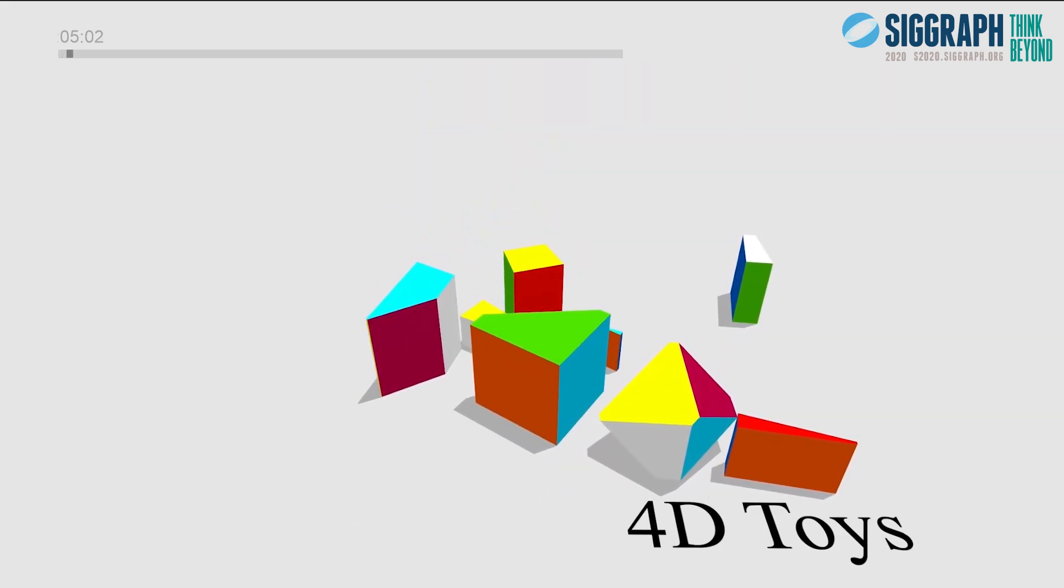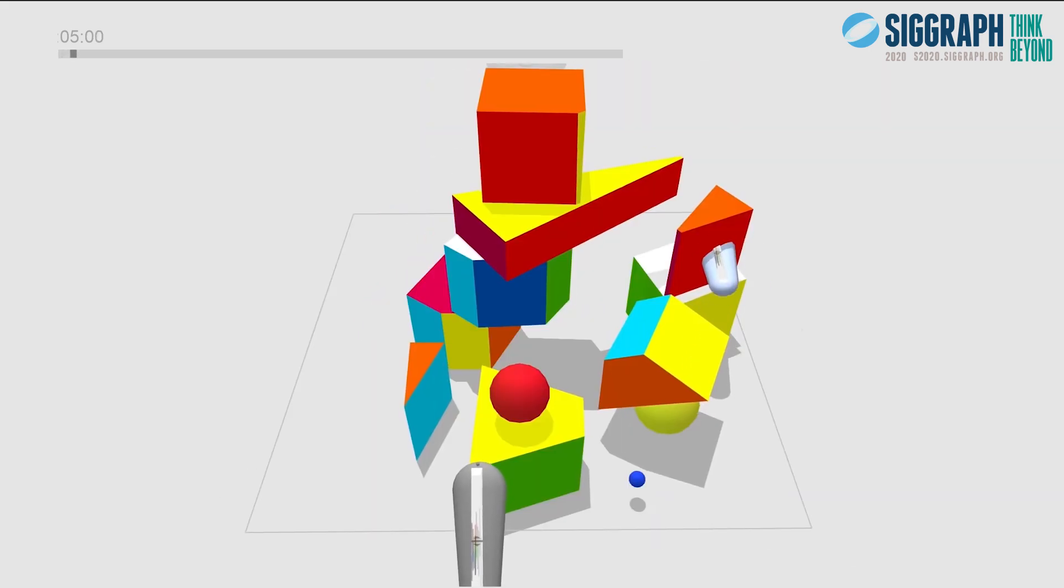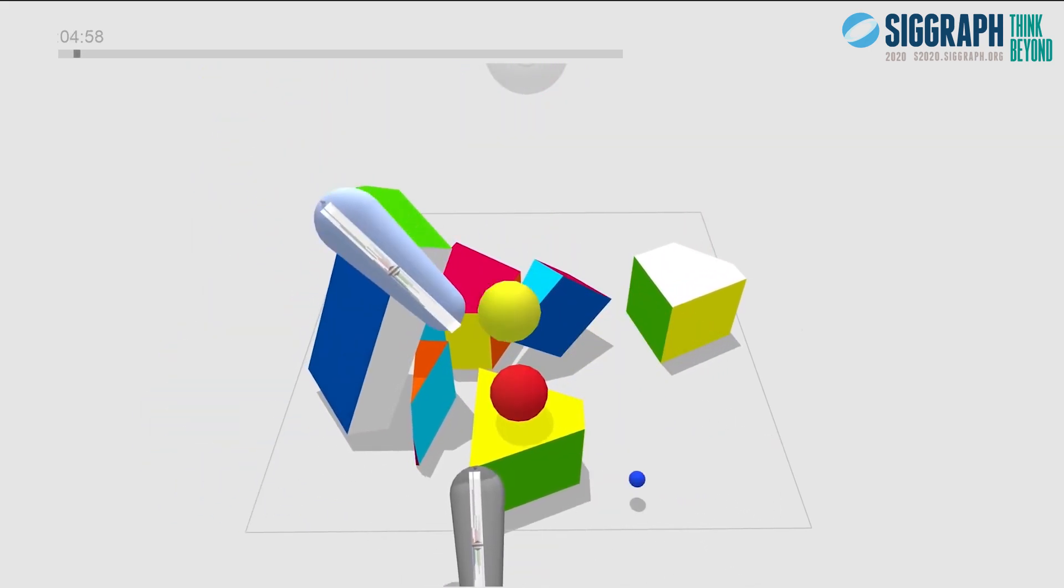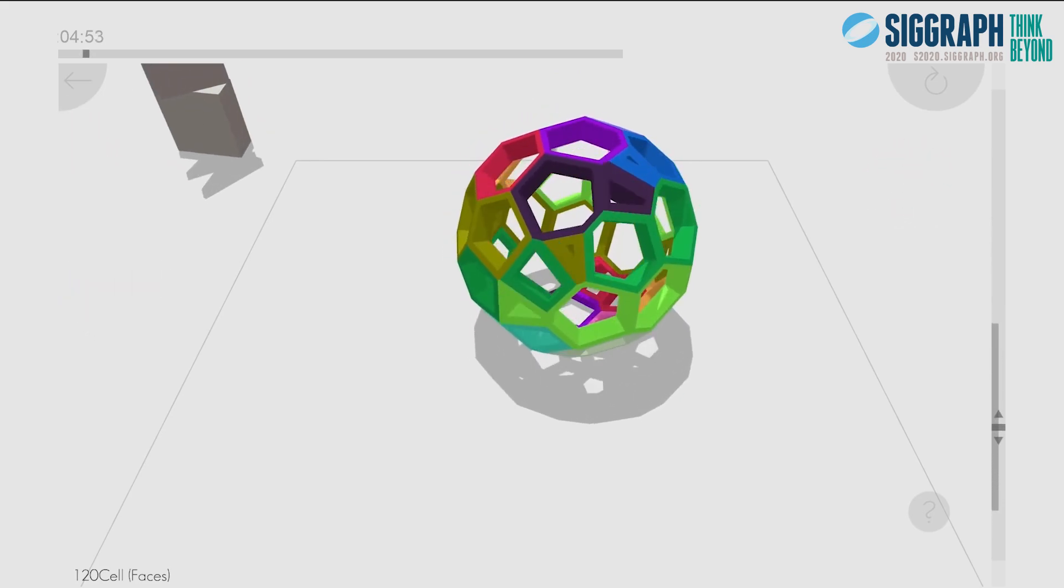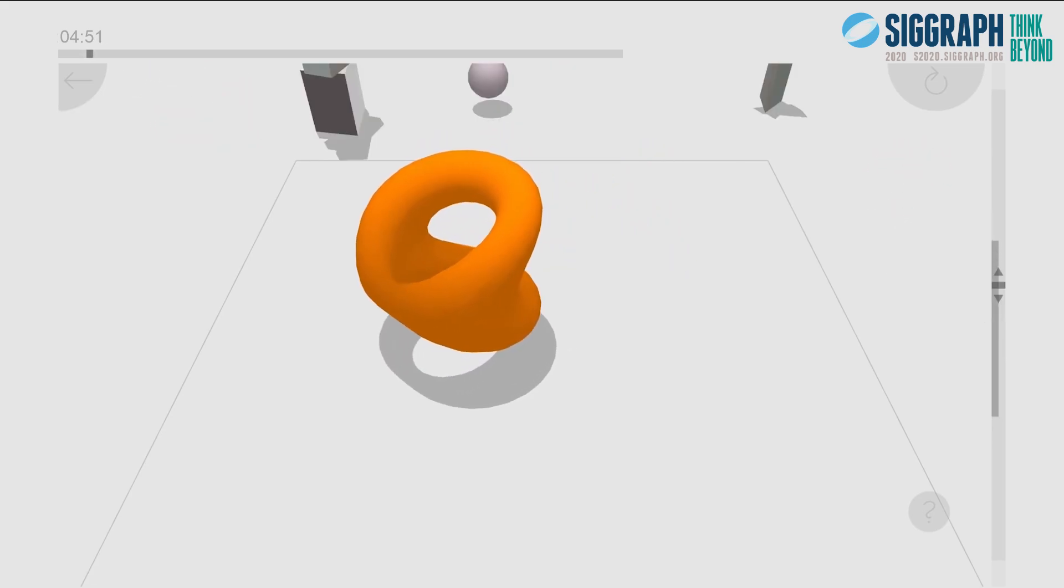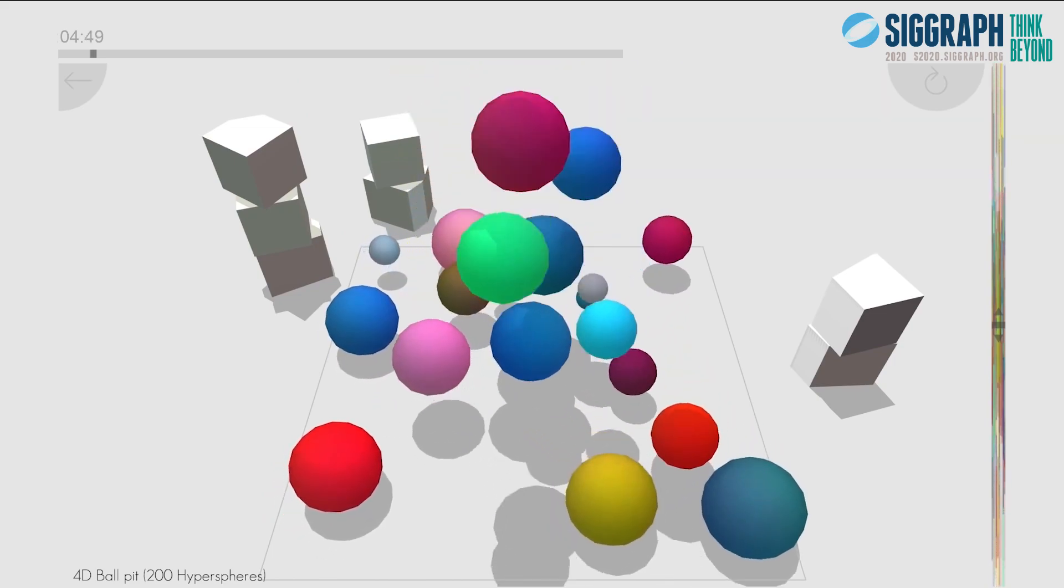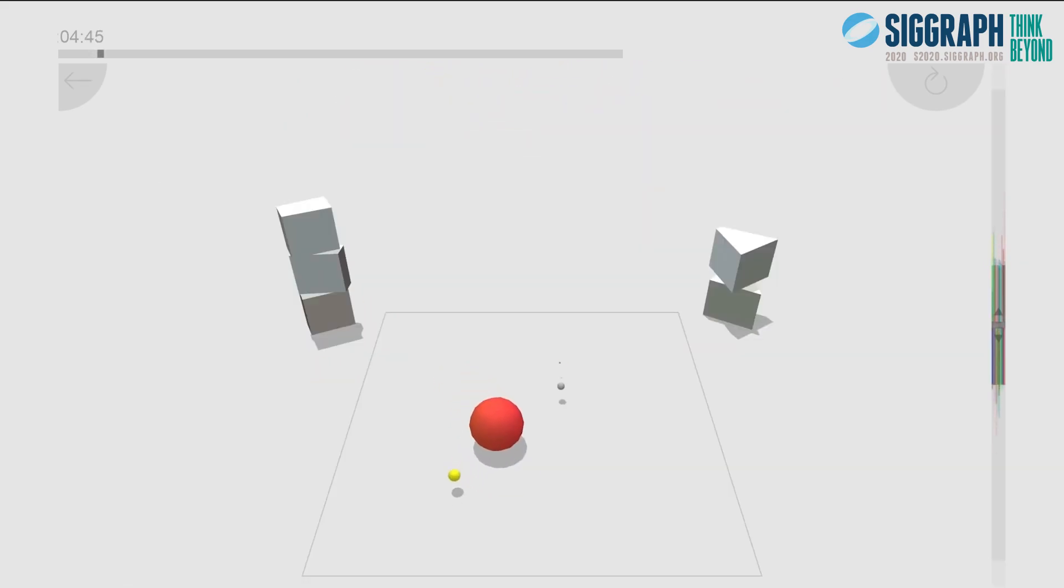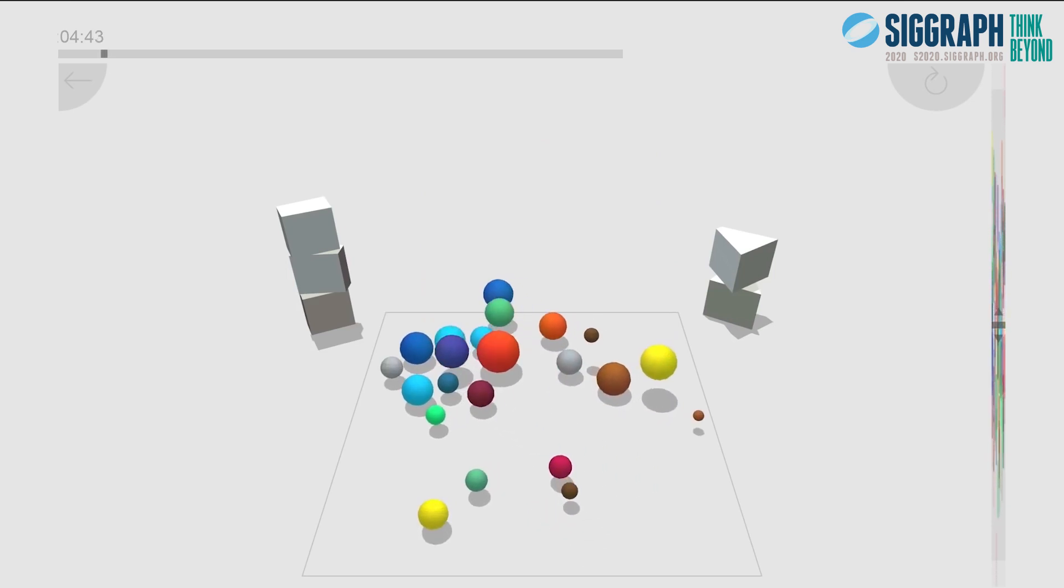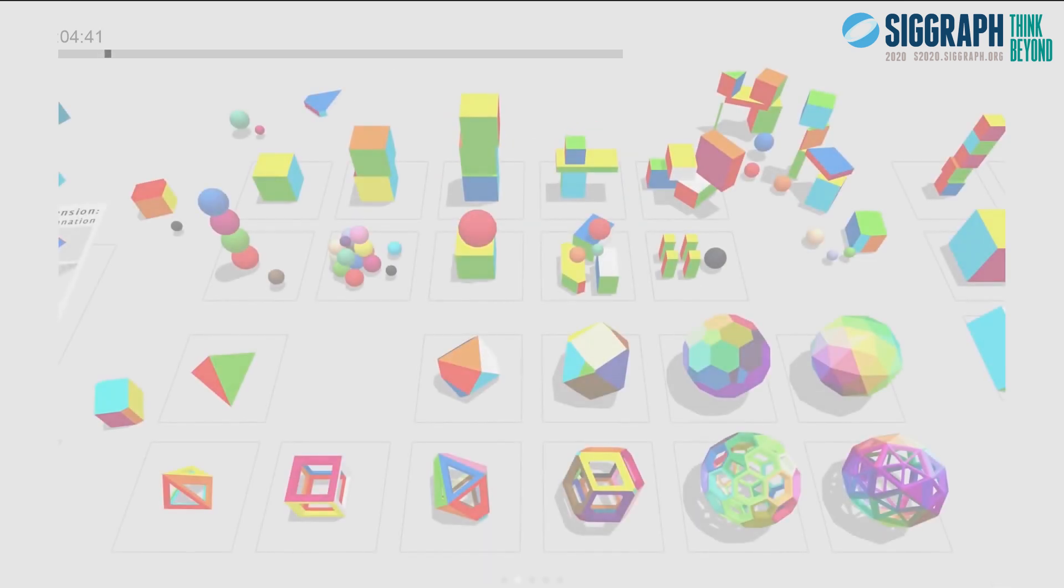4D Toys is a toy box filled with 4-dimensional toys. By 4-dimensional, I mean they exist in a world with 4 dimensions of space and 1 of time, instead of 3 and 1. It turns out the rules of how objects bounce, slide, and roll can be generalized to higher dimensions. I'll show you and explain what the 4th dimension is.